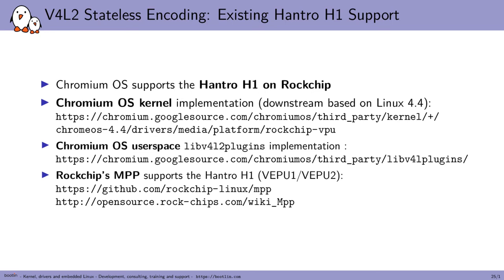There is already some existing Hantro H1 reference code — for example on ChromiumOS, where it's used with a downstream kernel driver that is pretty much stateless, plus a userspace implementation for rate control available as a V4L2 plugin. Rockchip also has its own implementation for its downstream kernel called MPP, which also supports the Hantro H1. The approach taken was to use the mainline Hantro driver, which is staging and supports decoding with the Hantro G1 — the decoder counterpart to the H1 — and I worked on adding H.264 encoding to that.